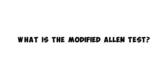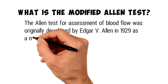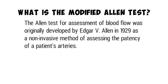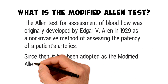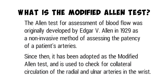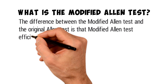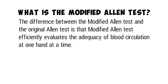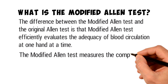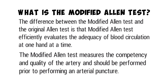What is the modified Allen test? The Allen test for assessment of blood flow was originally developed by Edgar V. Allen in 1929 as a non-invasive method of assessing the patency of a patient's arteries. Since then, it has been adopted as the modified Allen test, and is used to check for collateral circulation of the radial and ulnar arteries in the wrist. The modified Allen test evaluates the adequacy of blood circulation one hand at a time and should be performed prior to performing an arterial puncture.